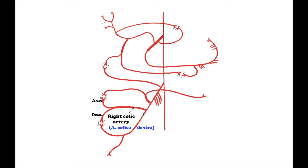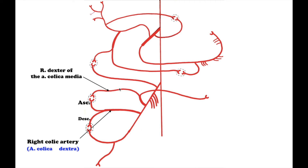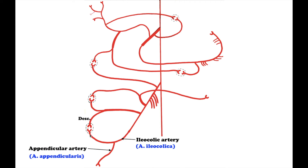The right colic artery, arteria colica dextra, divides into two branches: an ascending branch, which rises to meet the previously mentioned middle colic artery, and a descending branch, which descends to meet the ileocolic artery. The ileocolic artery is the lowest branch arising from the concavity of the superior mesenteric artery, and it gives rise to the appendicular artery and anastomoses with the right colic artery.